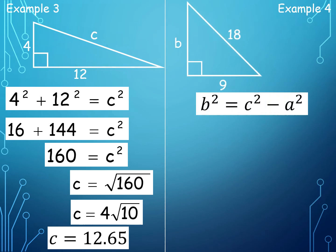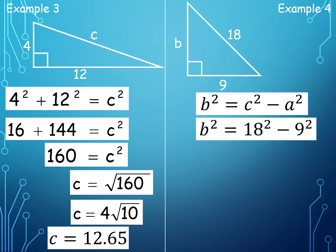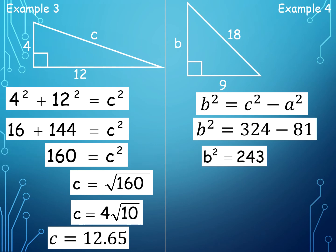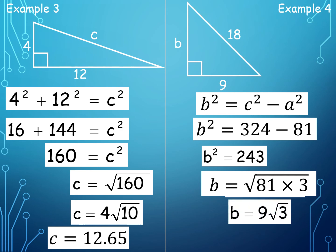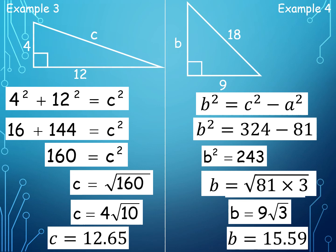Now let us have another one — solving for B. B squared is equal to C squared minus A squared. Substituting all the values: 18 squared minus 9 squared. 18 squared is equal to 324, and 9 squared is equal to 81. 324 minus 81 is equal to 243. 243 is not a perfect square, so we factor it where one factor is a perfect square: 81 times 3. The square root of 81 is 9, so we get 9√3. If you want to simplify it further, it is equal to 15.59. But 9√3 is acceptable already.